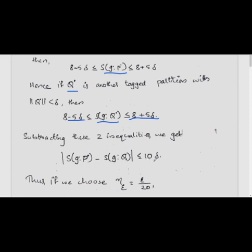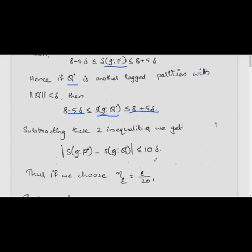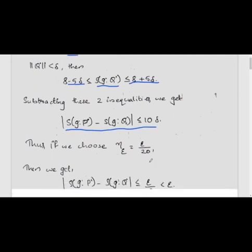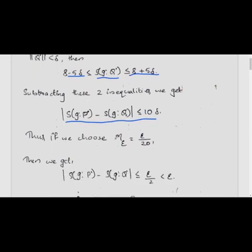So this is enough to prove that for every ε > 0, for every two tagged partitions P̊ and Q̊ with norm less than η(ε), we should have |S(g, P̊) − S(g, Q̊)| < ε. If η(ε) = ε/20, then the difference is less than ε/2, which is strictly less than ε.